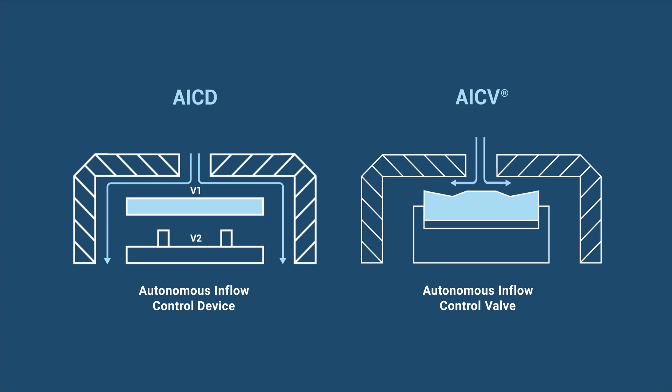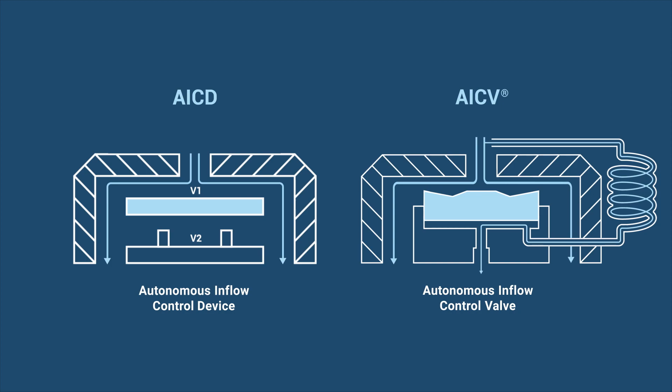In the AICV, however, there is not only one flow path. The movable part here is a piston, which moves as a result of a second flow path, separated from the main flow.